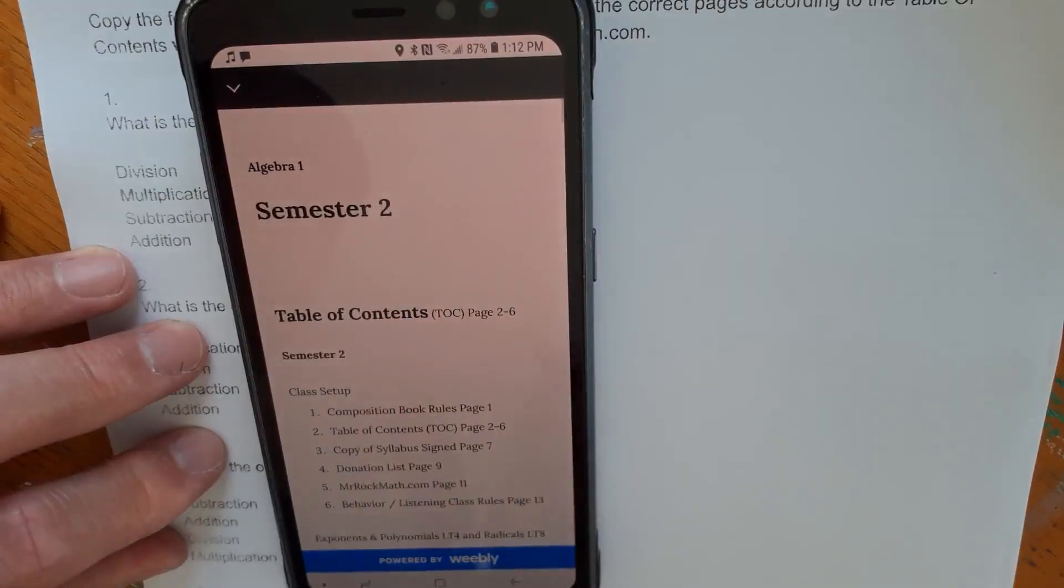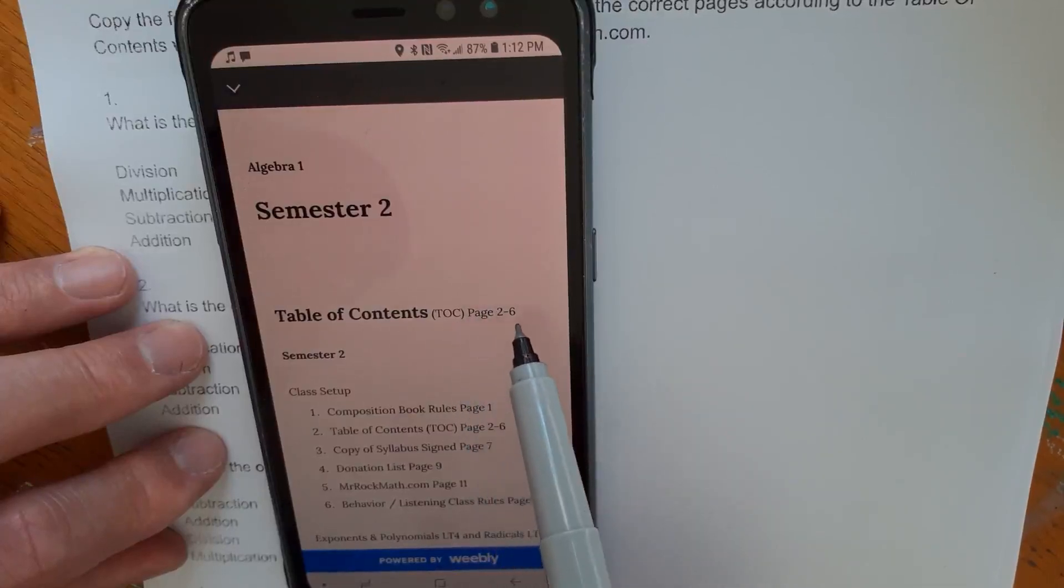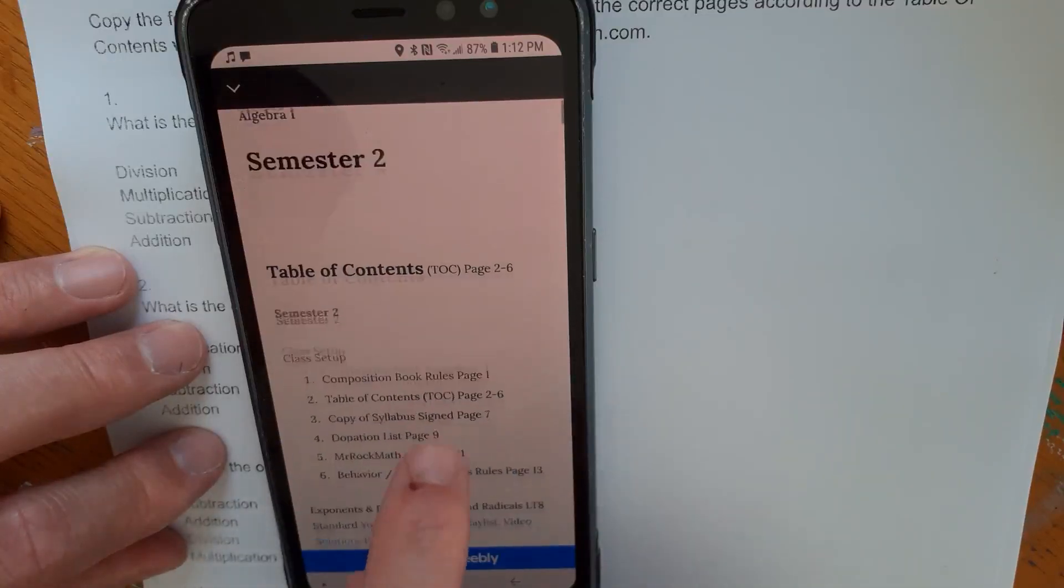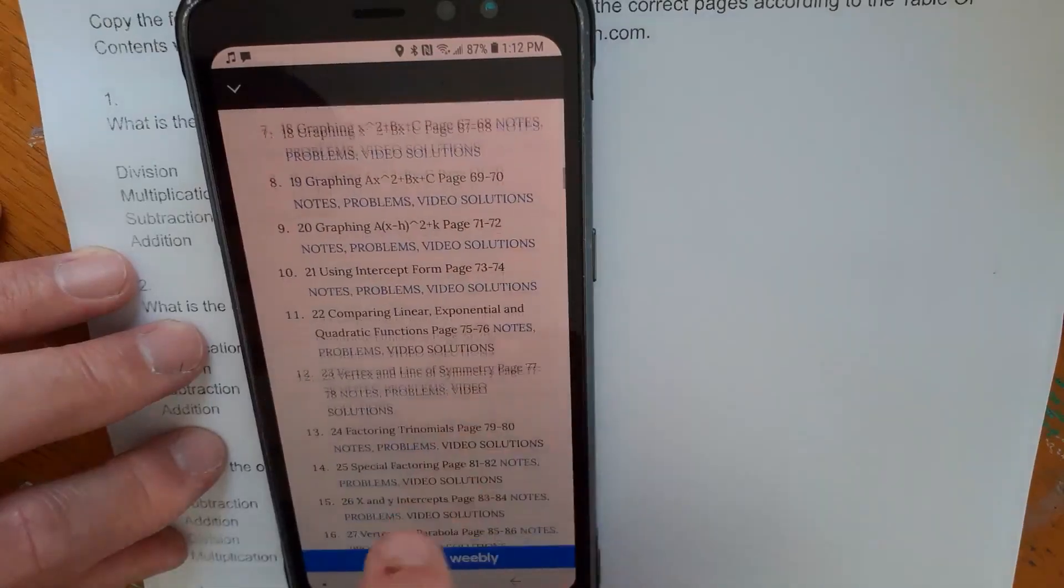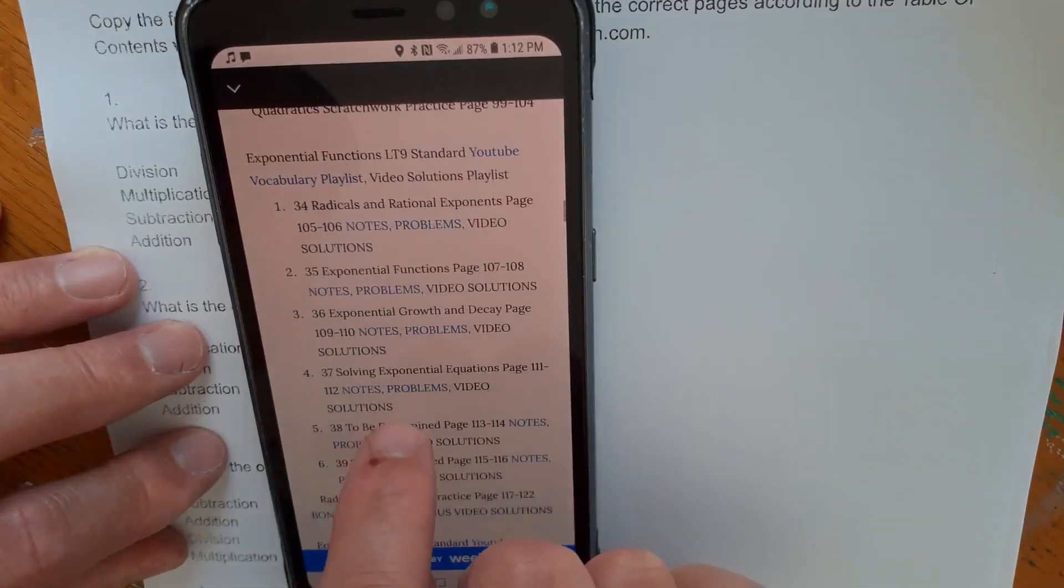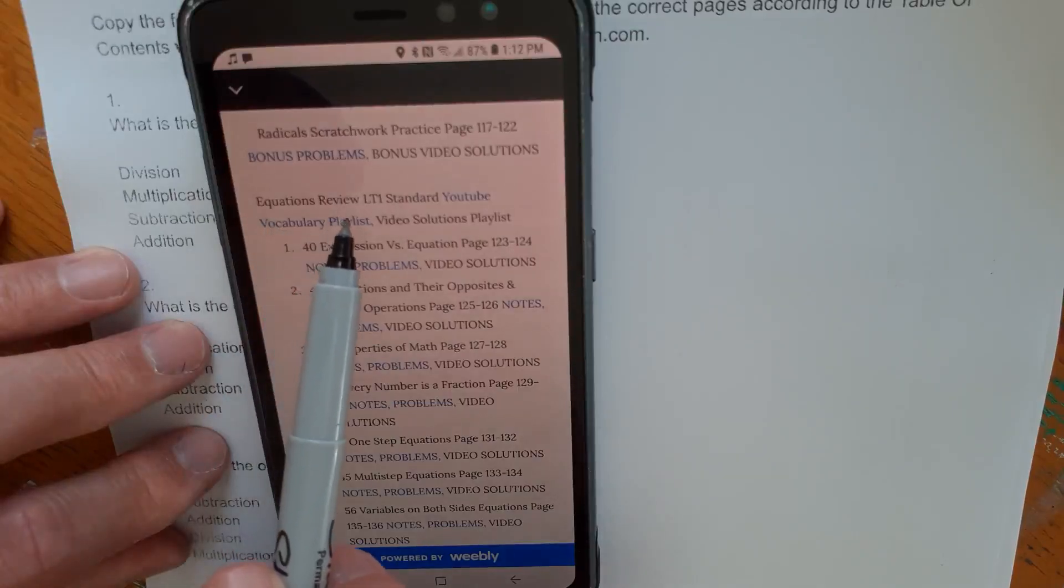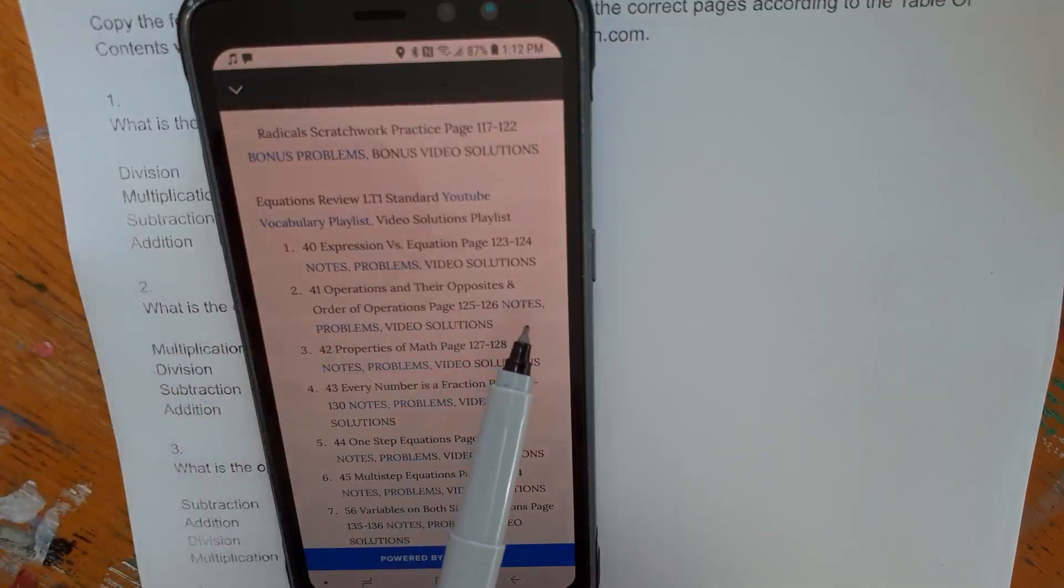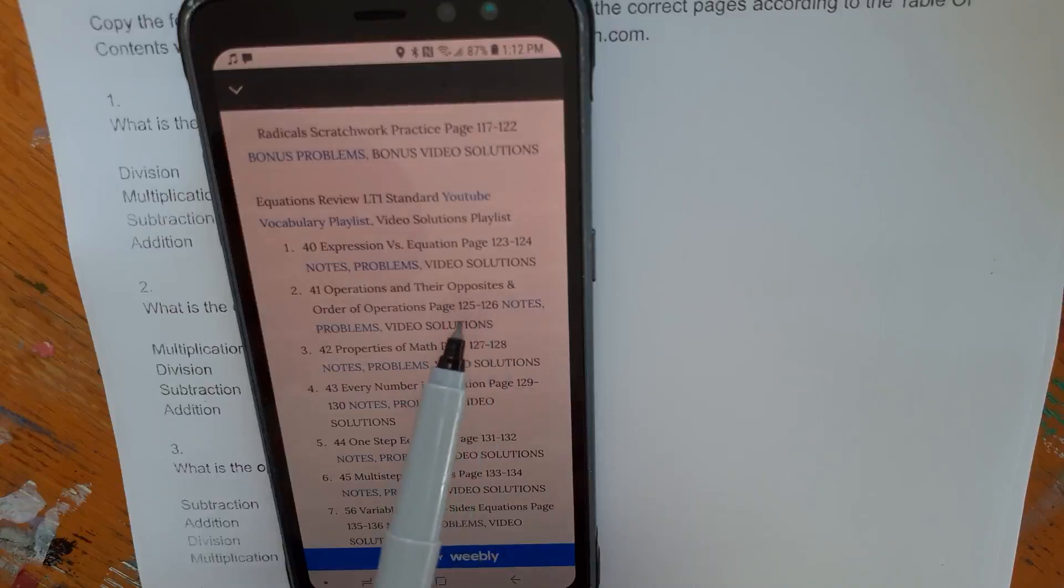So this is semester two. This is the Table of Contents. You should have written this into pages two through six of your composition book. If you haven't, do it now. Each line here gets a line in your composition book. It should take three or four pages. Once you write all that, you will know where everything goes. Let's go down to this standard equations review, lesson two, operations and their opposites and order of operations. Here's the page numbers that these notes go on in your comp book. Please don't look at this video to find the page numbers, but please look at the actual table of contents. By the time you look at this video, it will be different.